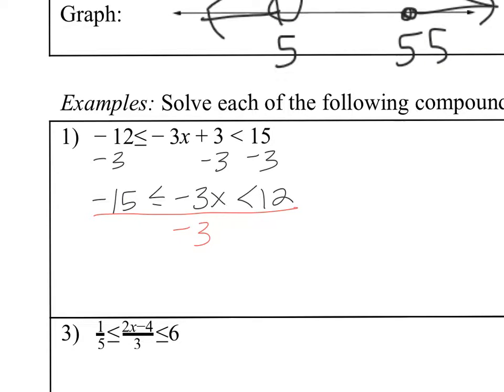So negative 12 minus 13 is negative 15, is less than or equal to negative 3x, is less than or equal to 12. Then divide by negative 3 to all three parts. Remember, when you divide by negative, you're changing the sense of the inequality. So it's going to turn into 5 is greater than or equal to x is greater than negative 4. When we write inequalities, we always want to write from least to greatest. So I'm going to write negative 4 is less than x is less than or equal to 5. This right here is the better notation.